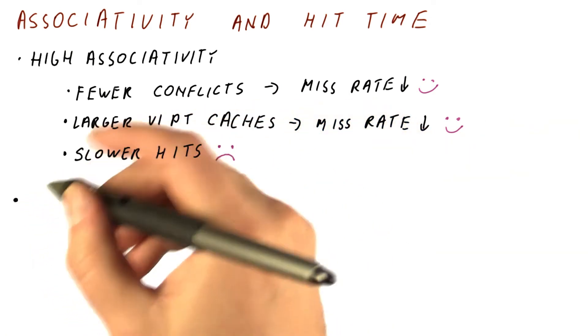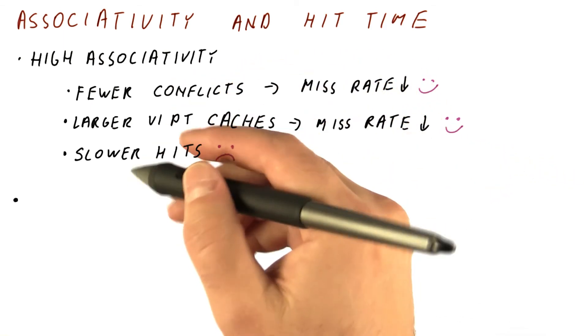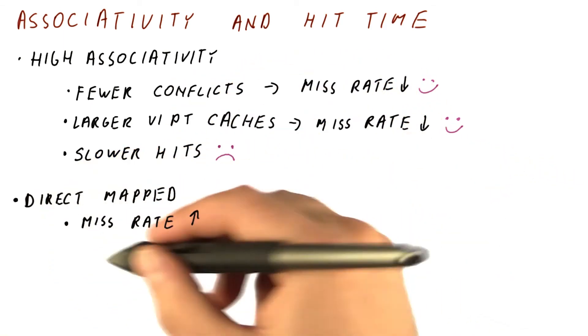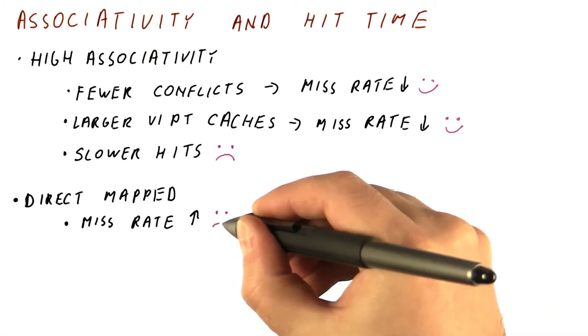On the other hand, if we go all the way to direct-mapped caches, the miss rate goes up for these two reasons, and that is bad.